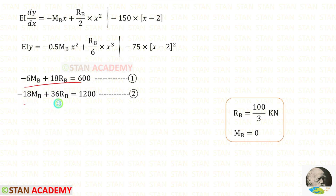Now we have two equations. We can use a calculator to solve them. If you do not know how to solve two equations using a calculator, see the description below — there is a link you can click to watch a video. Solving gives RB equal to 100/3 and MB equal to 0.